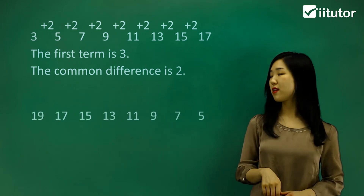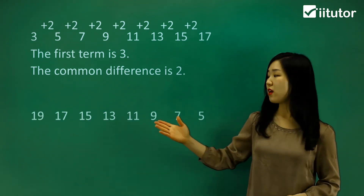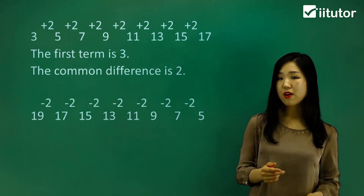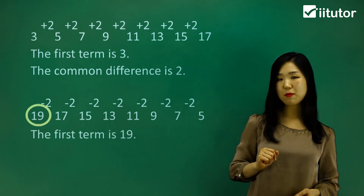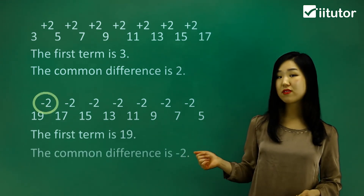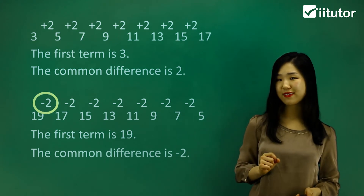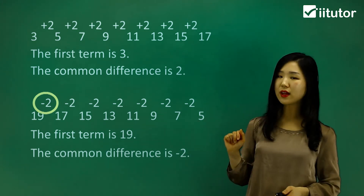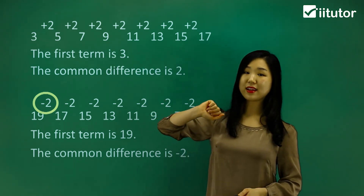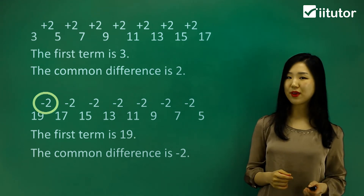If you look at another example, this one's actually going down, but same thing. You can see that we are subtracting 2 each time to get the next number. So in this one, the first term is simply 19, and the common difference this time is negative — it's negative 2. So if it's going down, if it's getting smaller, we have a negative common difference. And when it's getting larger each time, the common difference will be positive. Just remember that.